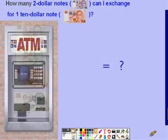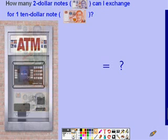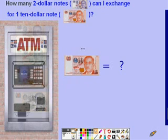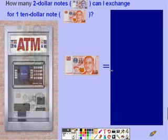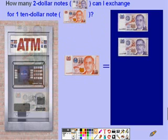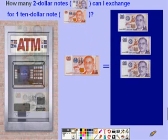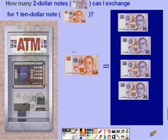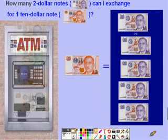You can do the same thing for notes. Now let's try this one: how many $2 notes can I exchange for one $10 note? That means how many $2 can I get for this one note? We do the same thing — watch and count, starting from the note's own value. That would be: 2, 4, 6, 8, 10. This means we can exchange 5 two-dollar notes for one ten-dollar note.